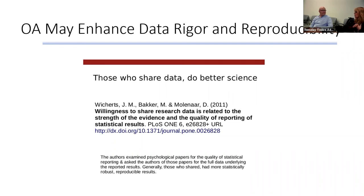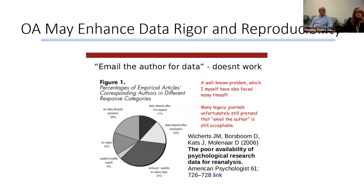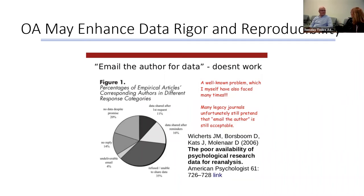If you email an author asking about how a study was done, they may or may not tell you. Sometimes a postdoc did the studies and didn't use best practices; the PI may have found out along the way but the paper was already published, and there is no way to reproduce that data. Those are a crying shame, but having open access — where you air all your dirty laundry and let everyone know exactly how you did the experiment — would really enhance reproducibility and alleviate a lot of these problems.